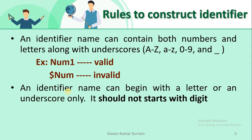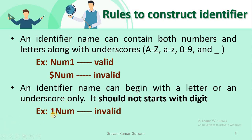The next rule is: an identifier name can begin with a letter or an underscore only — it should not start with a digit. For example, '1number' is invalid because it starts with a digit. You should not start with a digit.